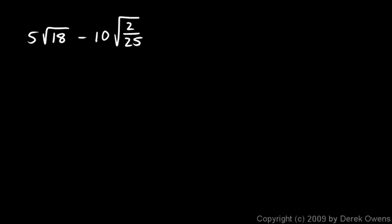Here's another example: 5 times the square root of 18 minus 10 times the square root of 2 over 25. We can simplify each of these. 18 we can think of as 9 times 2, so we'll have a perfect square factor in 18 that can come out. And 2 over 25 — this 25 can get square rooted. So both of these radicals can get simplified. This gives me 5 times the square root of 9 times 2 minus 10 times the square root of 2 over 5.